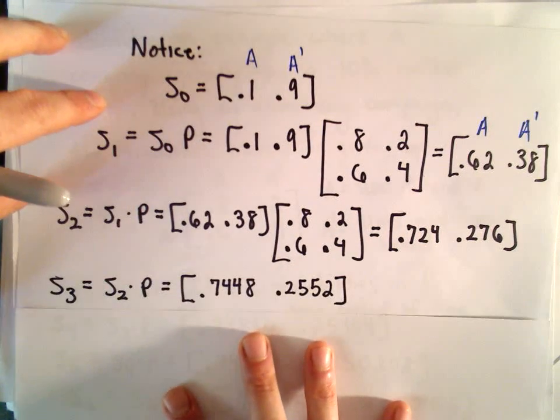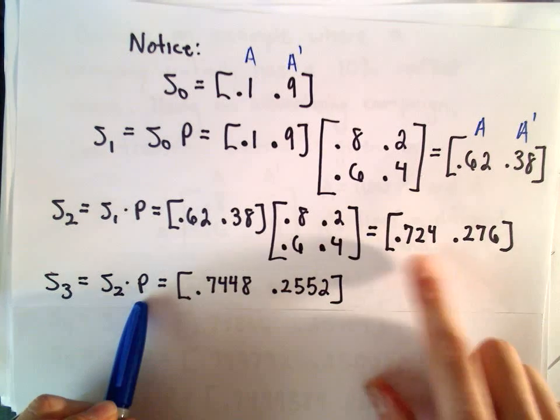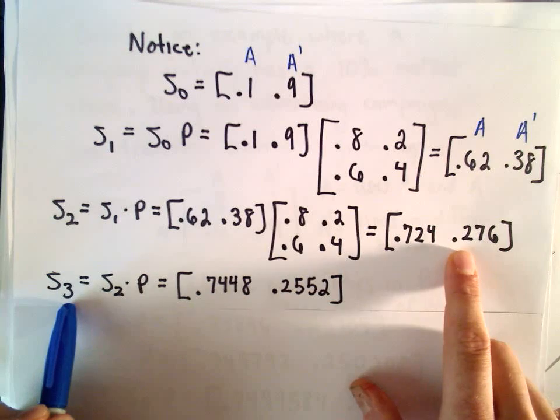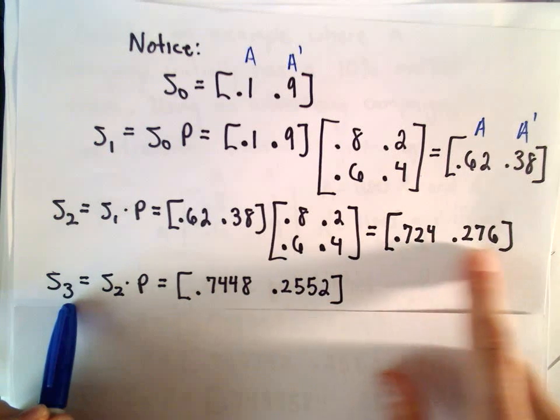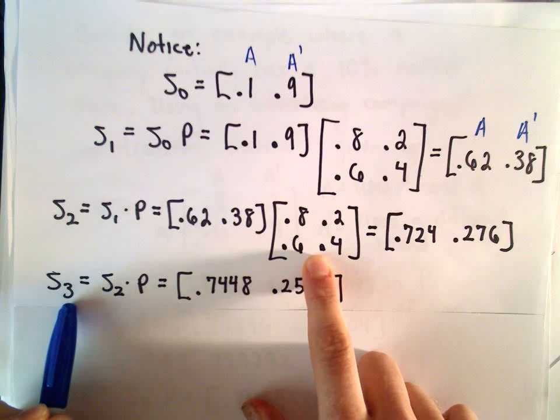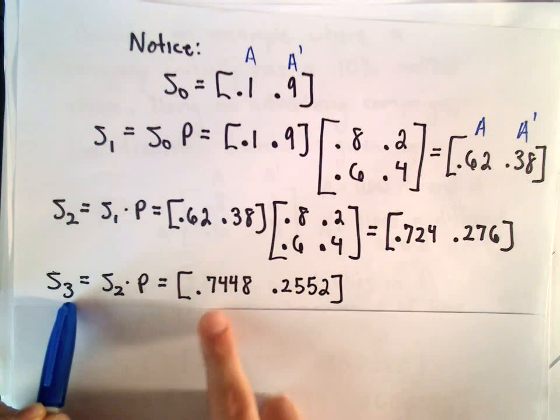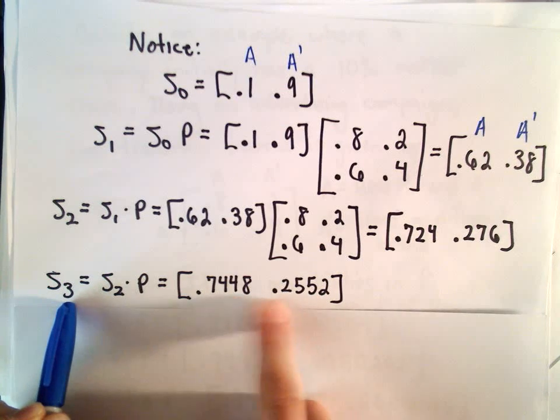We could keep this process up. To figure out what happens three months later, we would take the market share, multiply by the transition matrix, and I got these values. So it's increasing, but by even less.